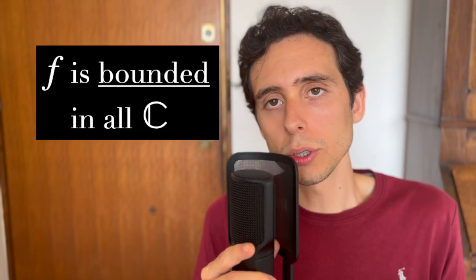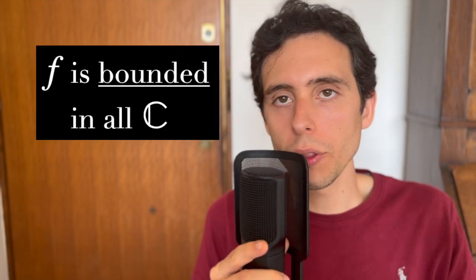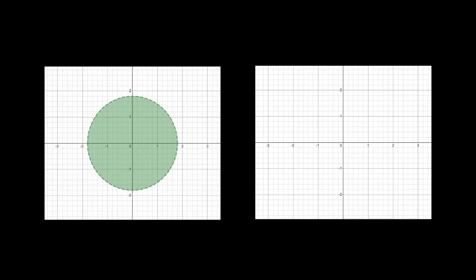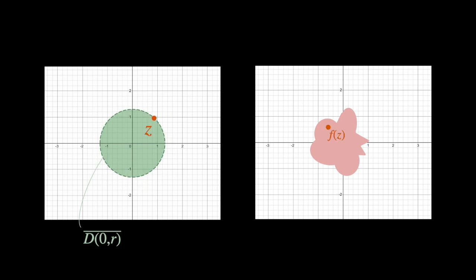So, since the image of f is bounded for every point inside and outside of this disk, therefore, we can conclude that f is bounded in all the complex plane. Let's see what happens now for the image of the closed disk centered in 0 and with radius r. Its image is going to have some shape that we don't know. But we know that this image is going to be bounded.